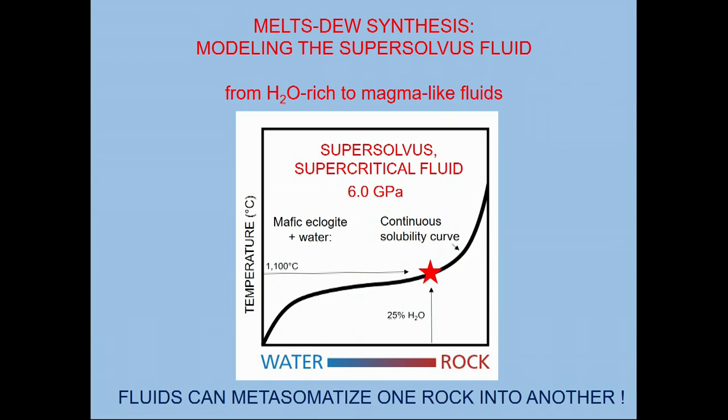Under these conditions also, it's important to start looking at the kinds of mass transfer that supercritical supersolvus fluids could participate in. So as part of the DEW-MELTS, or MELTS-DEW synthesis, working with Mark Ghiorso, we were able to show that a fluid that I mentioned earlier, published by Elazar et al. this year, at 1,100 degrees C and at 6 GPa in equilibrium with a mafic eclogite, garnet, clinopyroxene, and coesite, that has only 25 weight percent water in it, so it's well along the spectrum between water and rock here.